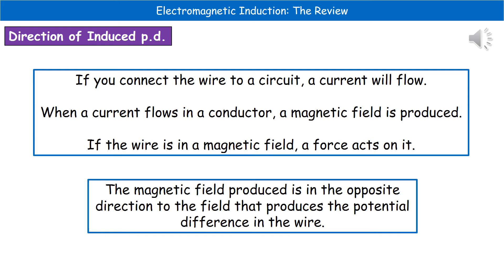The one thing to bear in mind is that the magnetic field produced is going to be in the opposite direction to the field that produces the potential difference in the wire. Otherwise, the law of conservation of energy just couldn't be true. So it always has to be in the opposite direction.